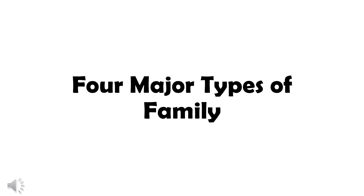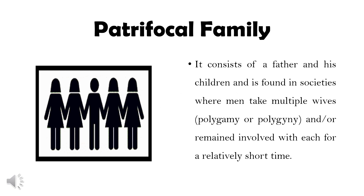4 Major Types of Family. A patrifocal family consists of a father and his children, and is found in societies where men take multiple wives — polygamy or polygyny — and or remain involved with each for a relatively short time. This type of family is rare from a worldwide perspective, but occurs in Islamic states with considerable frequency.